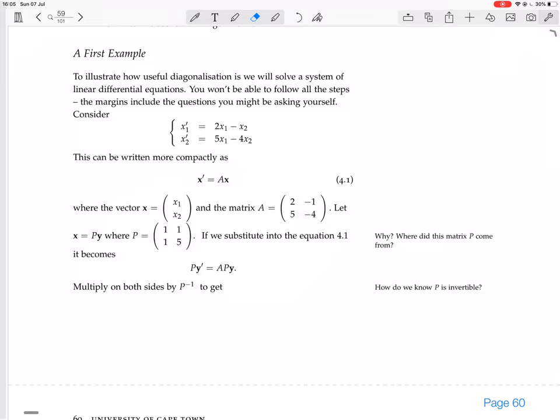You can write this more compactly as x dash equals matrix A times the vector x, where this matrix A has these coefficients. Hopefully you can see how that works. Now let x equal Py, where P is the matrix with entries 1, 1, 1, 5. So we're making a change of variables. Effectively, we're letting y equal the inverse of P times x. If we substitute into the equation 4.1, we're going to see right now why we chose this P, because it works. We're going to see later how we actually calculate that P.